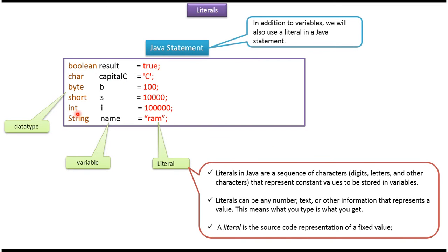Similarly, int i equals 100,000. Here, int is the data type, i is the variable, and 100,000 is the literal.